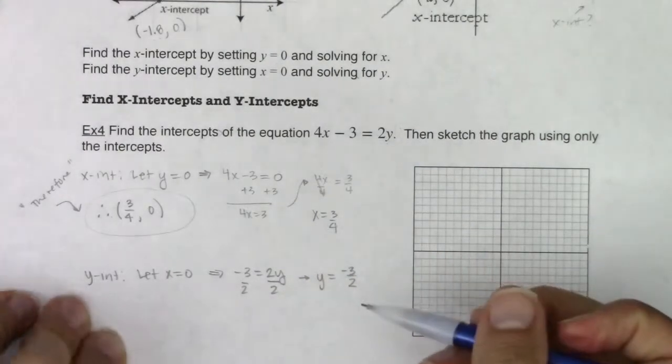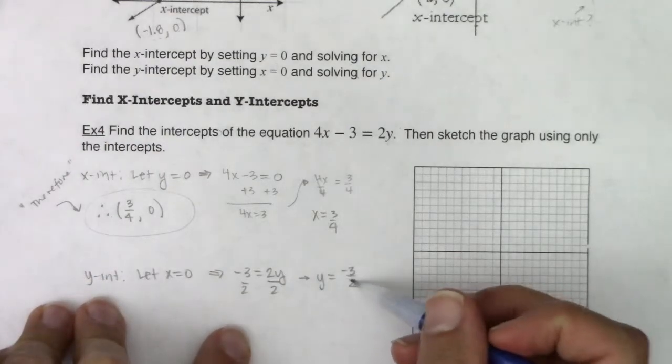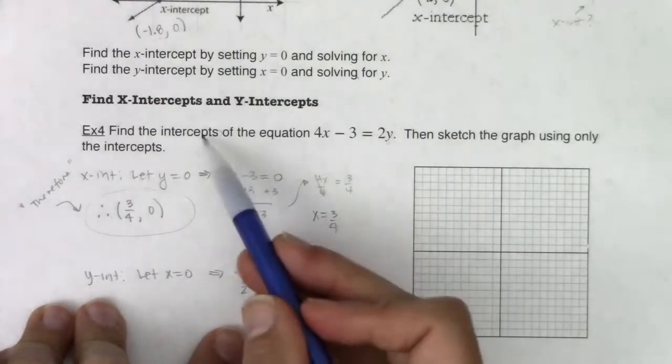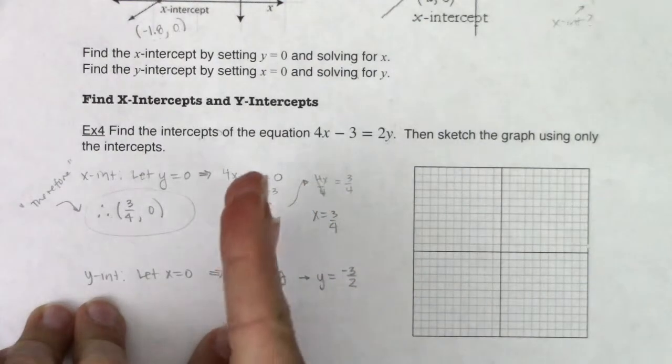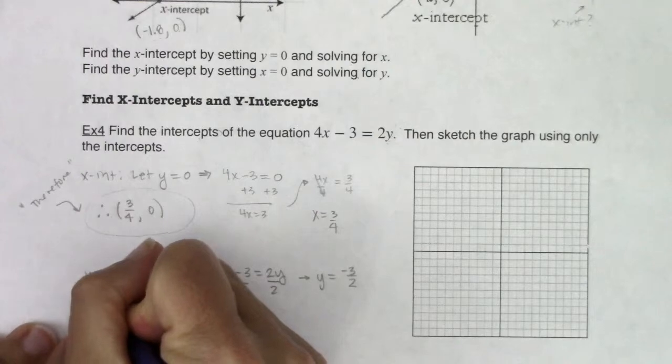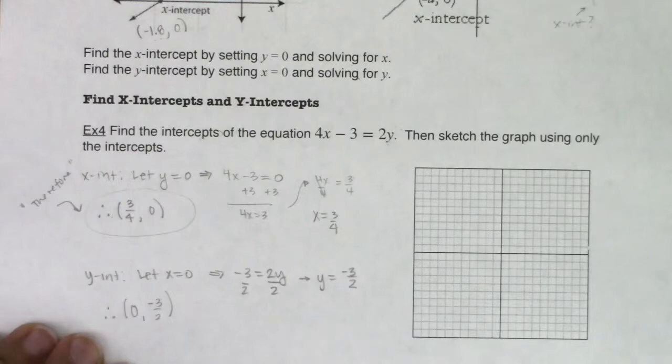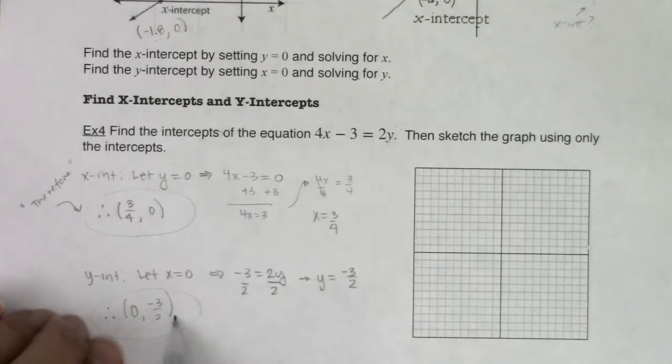But again, you're in my class now, so you get to follow some of my rules. I would not give this full credit. If I want an intercept, it requires an x-coordinate and a y-coordinate. So for this y-intercept, we know the x-coordinate is 0, and the y-coordinate is negative 3 halves. So this is the answer I'm looking for. You don't have to have the therefore symbol, but I need to see the 0 and the negative 3 halves.